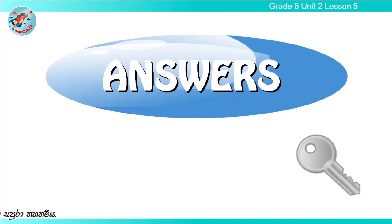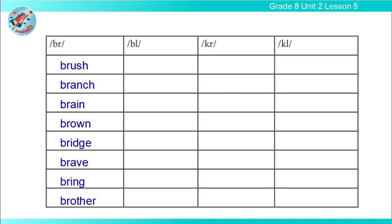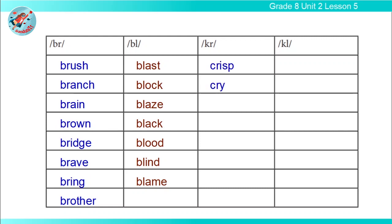Have you all finished? Let's check your answers now. The words with the 'br' sound are: brush, branch, brain, brown, bridge, brave, bring, and brother. The words with the 'bl' sound are: blast, block, blaze, black, blood, blind, and blame. The words with the 'cr' sound are: crisp and cry. And the words with the 'cl' sound are: claim, class, claws, clean, clock, and clay.